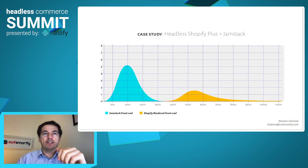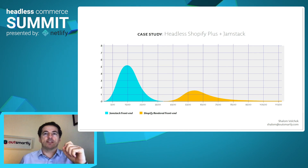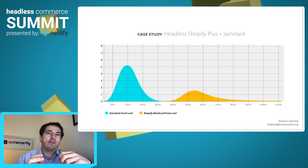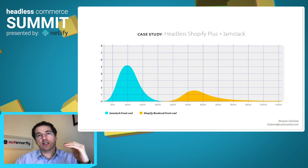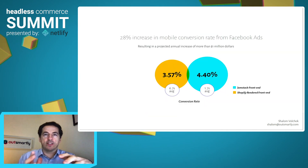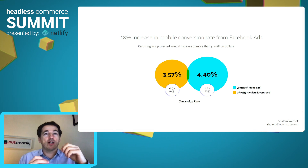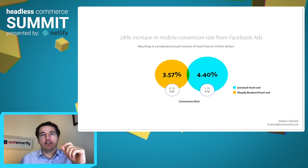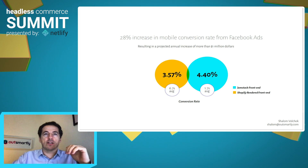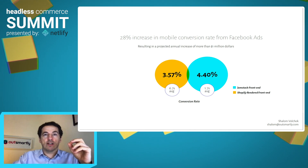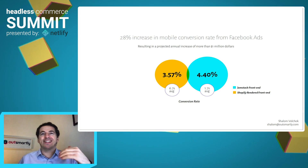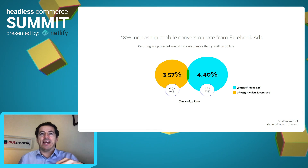I've got a couple more slides here from data that we gathered ourselves during an A-B test that we ran for a Shopify Plus store migrating to a Jamstack front-end. This is a histogram of the largest contentful paint between the Jamstack site and the Shopify rendered version. While the Jamstack site is clearly faster, it's also much more consistent, as we can see in the long tail of slow loading times for the Shopify rendered version. We saw a 28% increase in the mobile conversion rate from Facebook ads, which for this particular store equates to a projected revenue gain of more than a million dollars annually. The takeaway here is that as we invest in performance, it becomes increasingly important to keep our site fast. It's one thing to build a fast site and another thing to keep it fast.